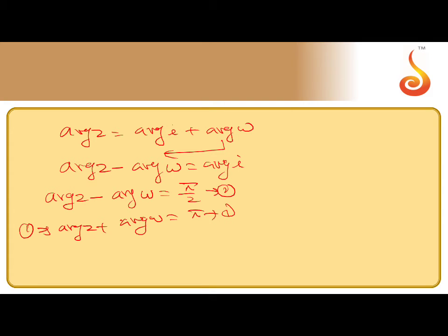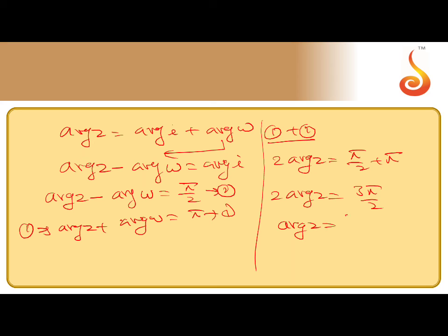First equation, adding 1 and 2 equations. Adding both, argument of w cancels. That is 2 times argument of z is π/2 plus π. 2 times argument of z is 3π/2. Argument of z is 3π/4, is the answer here.